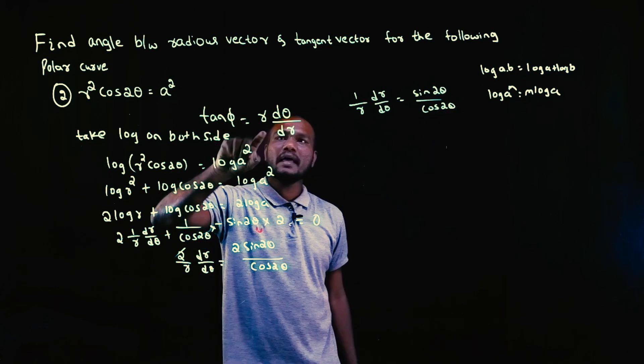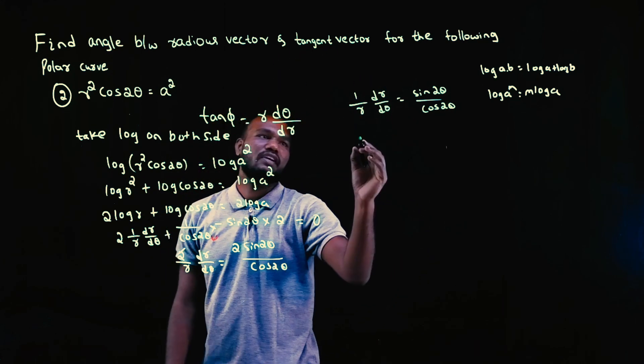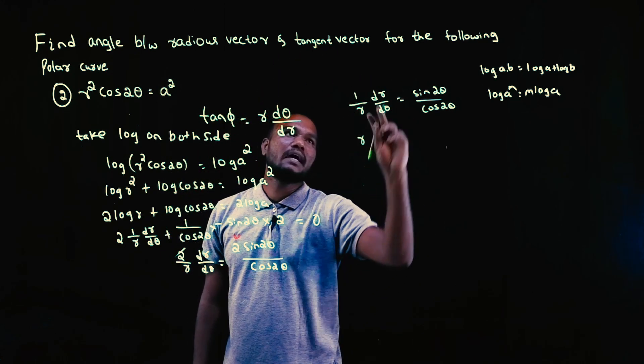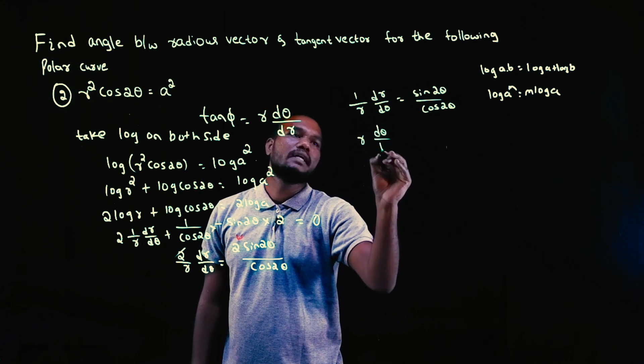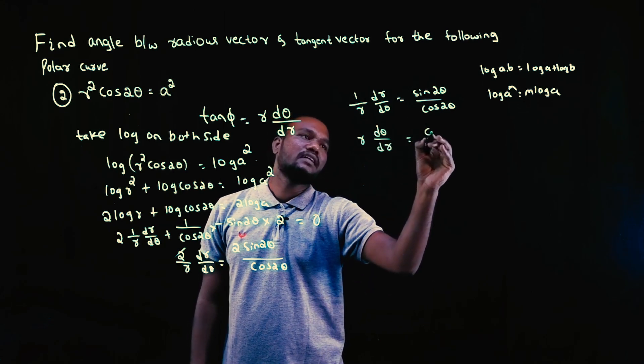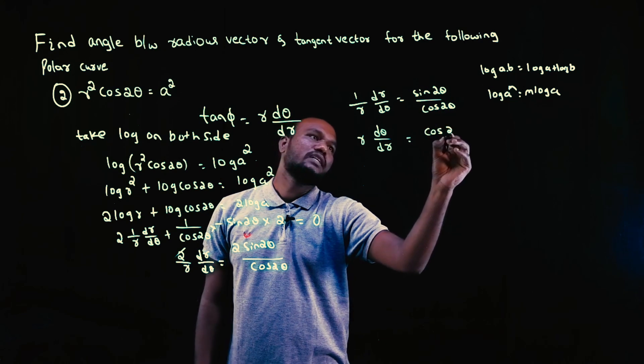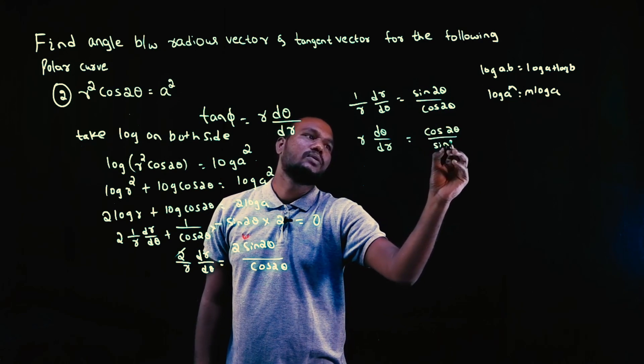I need r, not 1/r. So I just reverse this. If I reverse this, 1/r becomes r, dr/dθ becomes dθ/dr. If I reverse here, I must also reverse there. So it becomes cos(2θ)/sin(2θ).